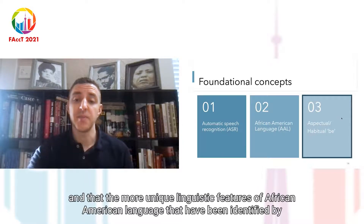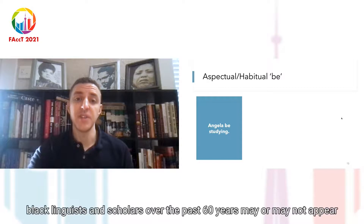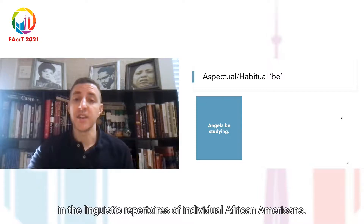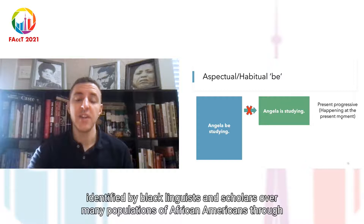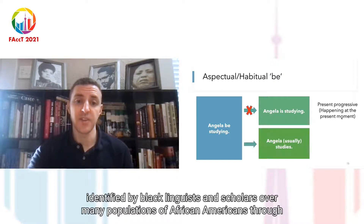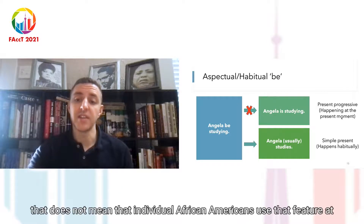Now let's talk about habitual B. Let's start with an example: 'Angela B studying.' Many times when a person who is not familiar with African-American language encounters a sentence like this, they will interpret it as 'Angela is studying,' meaning it's the present progressive — happening at the present moment. This, however, is an incorrect interpretation. 'Angela B studying' actually correlates with 'Angela usually studies,' meaning simple present happening habitually.